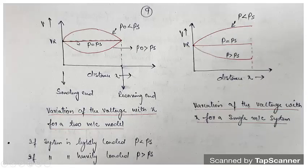This is a very important diagram — it shows the variation of voltage with x from sending end to receiving end. This is the sending end and this is the receiving end. When power equals the surge impedance loading P₀ equals PS, the voltage from one end to the other is the same — it does not change all along the line. This type of voltage variation is known as a flat voltage profile because it is flat throughout.